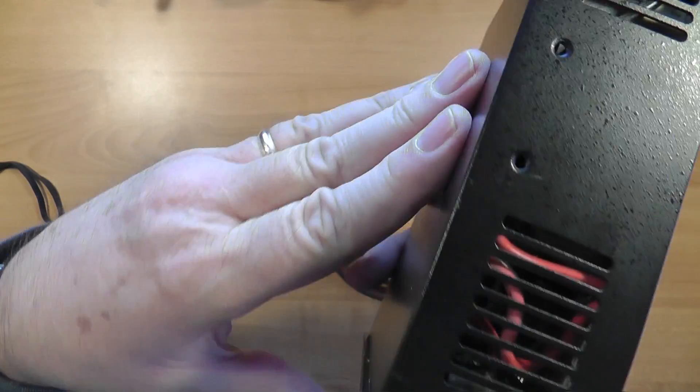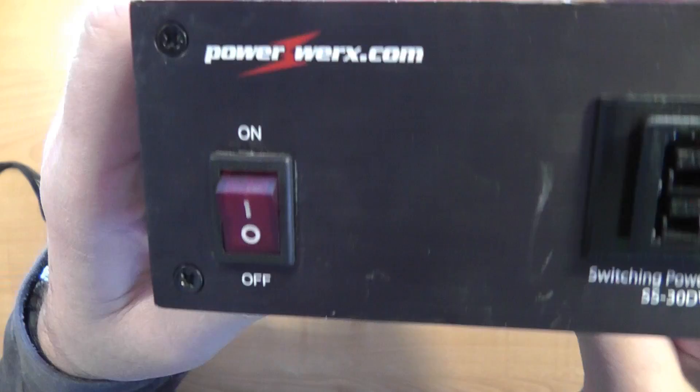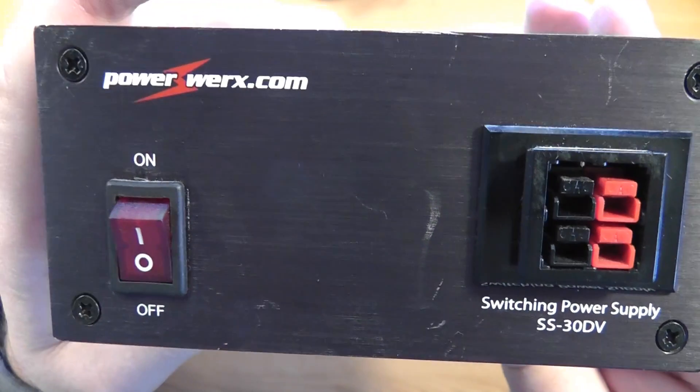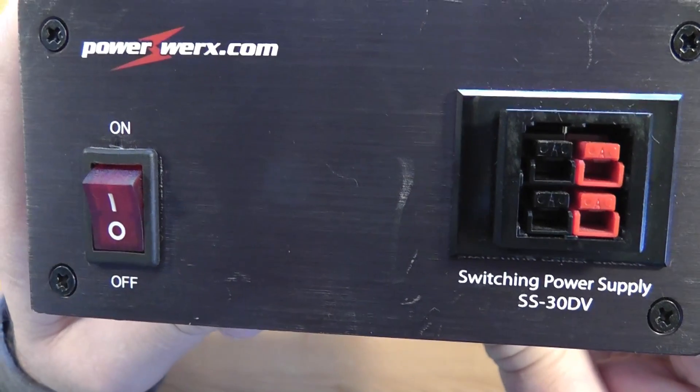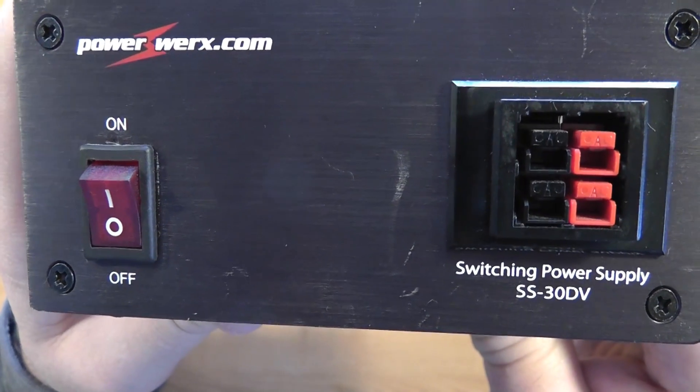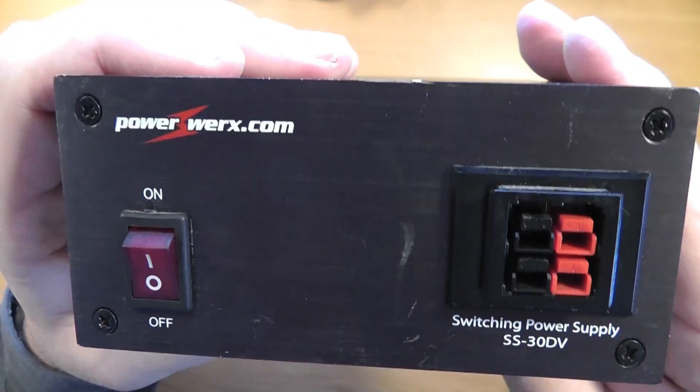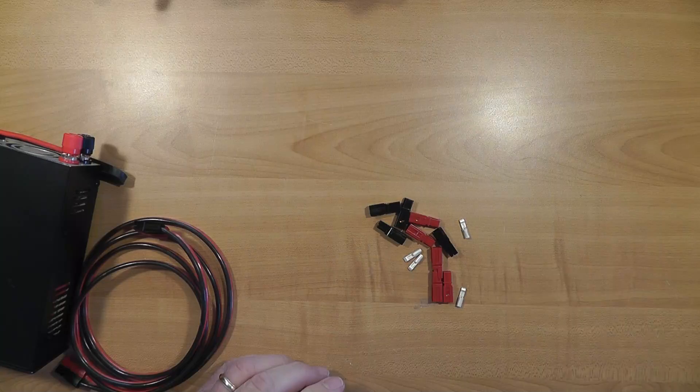This, by the way, is a nice little power supply that's been out on the market for a long time from PowerWorks. And it's a switching power supply. It's 25 amps. Actually, it'll go up to 30 on peak and it's perfectly capable of powering modern HF 100 watt radio.